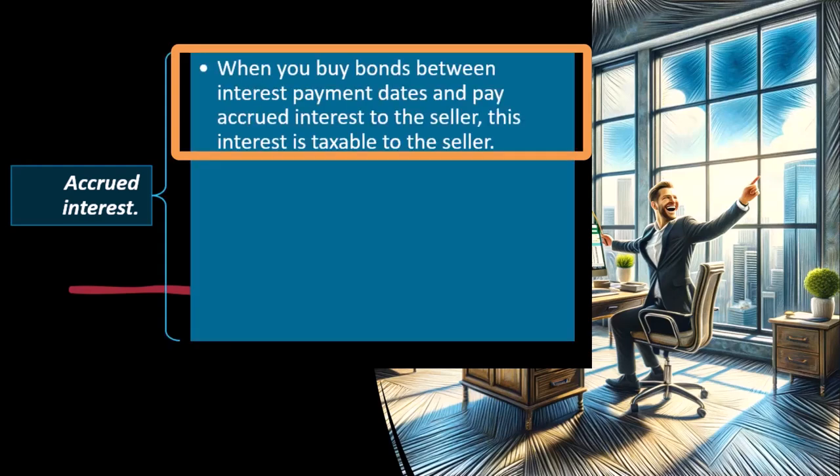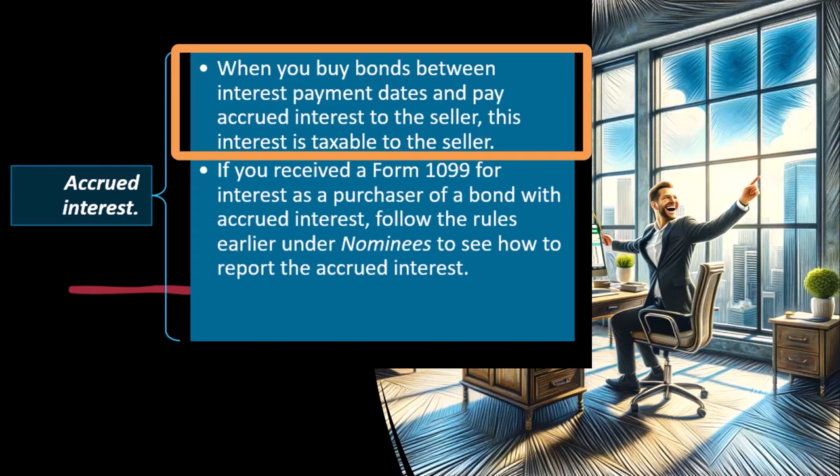Accrued interest. When you buy bonds between interest payment dates and pay accrued interest to the seller, this interest is taxable to the seller. Accrued interest is interest that has compiled up between the payment dates. This is somewhat of an unusual situation because many people buying and selling bonds are probably doing so in the format of mutual funds or ETFs, which have a somewhat different structure than buying individual bonds.